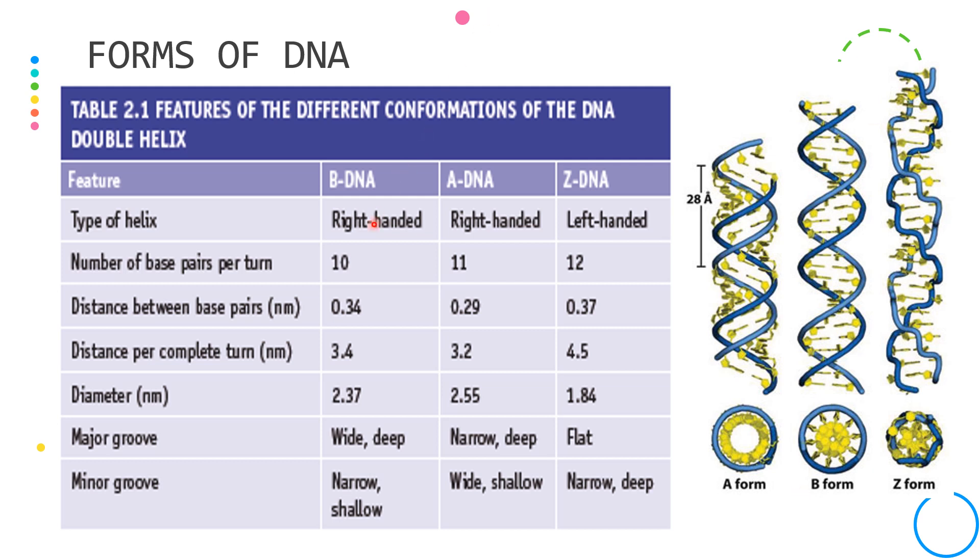The B form of DNA has 10 base pairs (10BP), with 0.34 nanometers between adjacent base pairs, and hence a pitch or a distance to complete a turn of 3.4 nanometers. The diameter of the helix is 2.37.